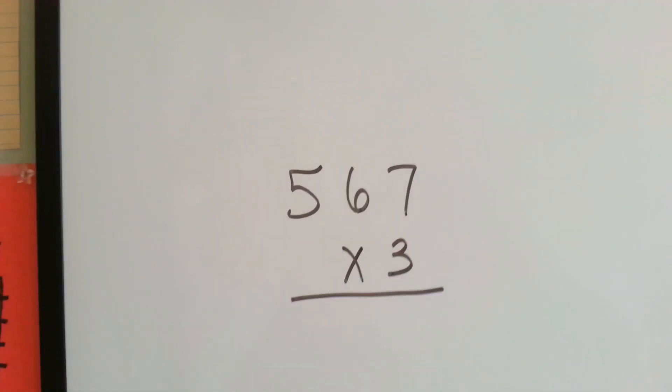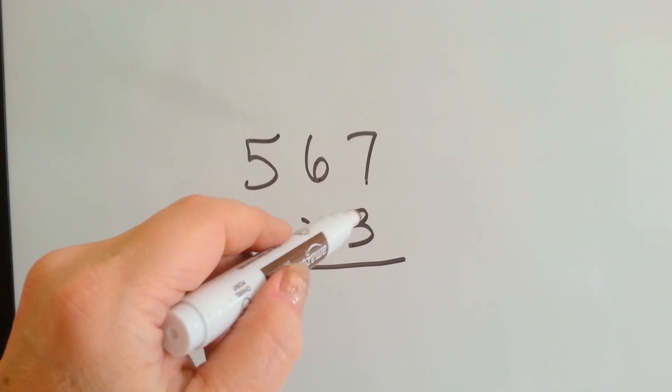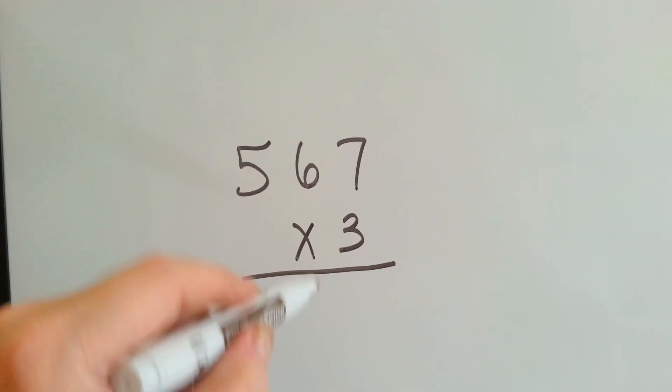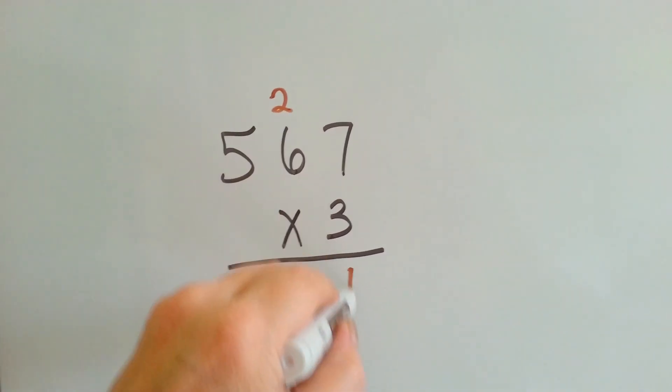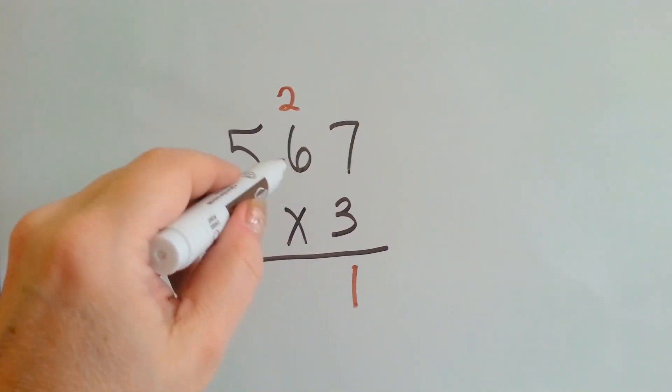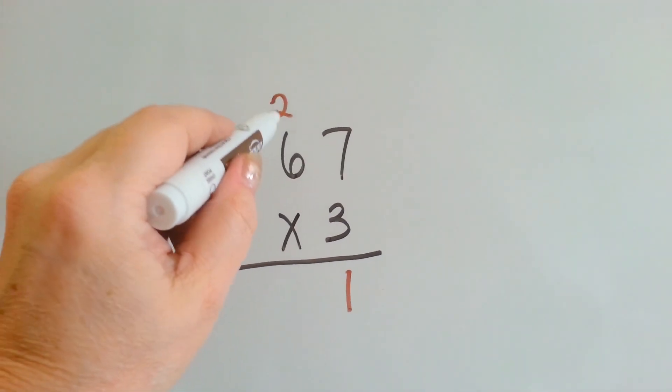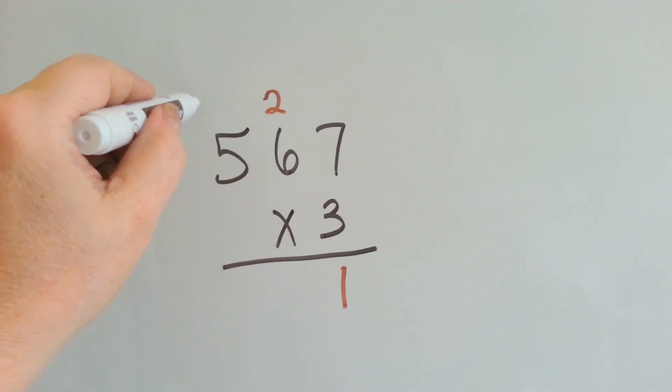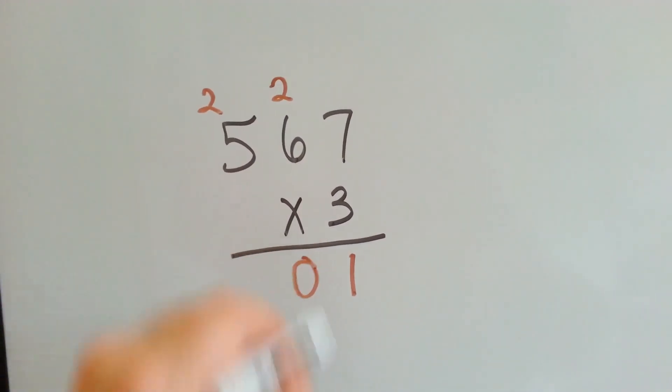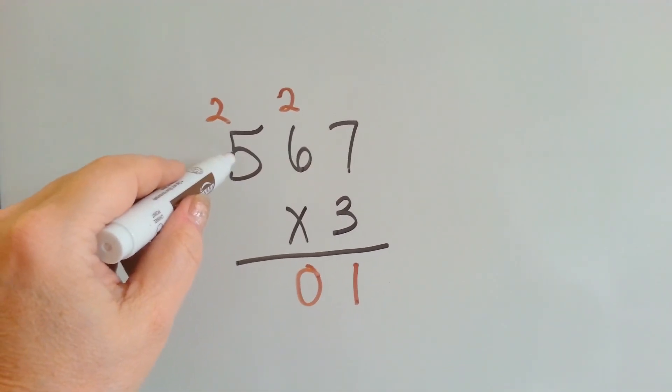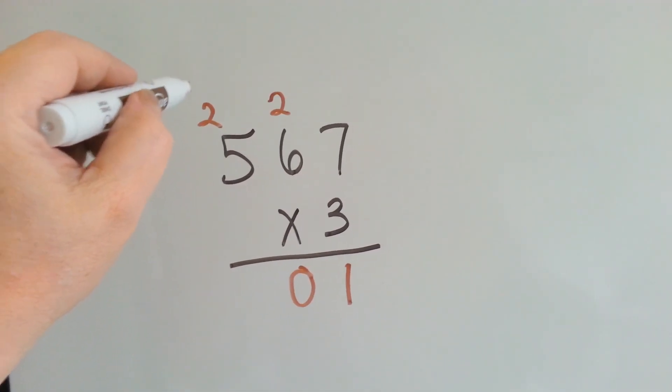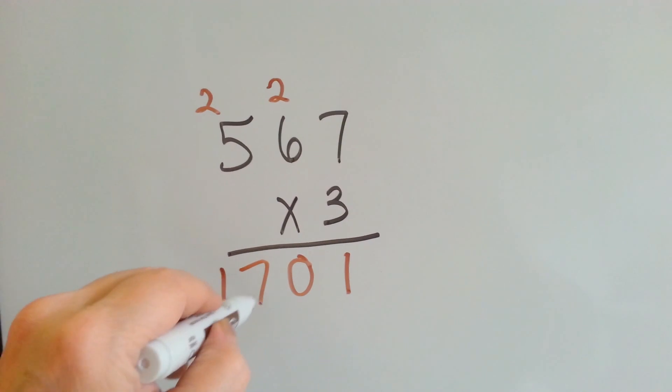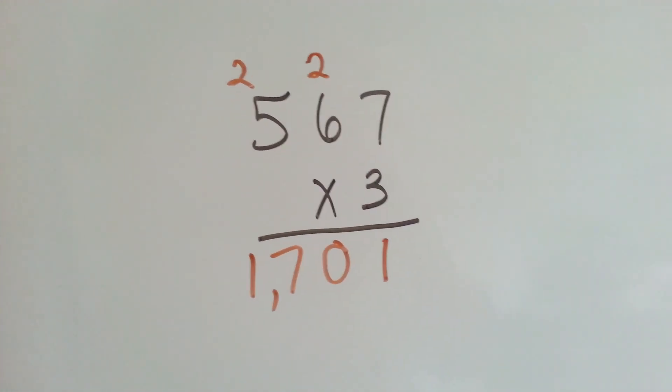Let's see what we've got here. 3 times 7 is 21. We carry over the 2 and put the 1 down. 3 times 6 is 18, plus 2 is 20. We put the 2 up and the 0 down. 3 times 5 is 15, plus 2 is 17. See how we did that? That wasn't that hard.